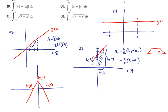And you can see that that will have a vertex of 0, 1, and x-intercepts of negative 1, 0, and 1, 0.